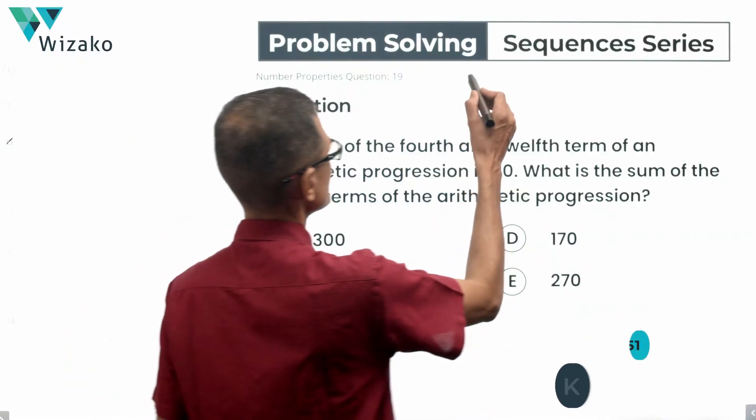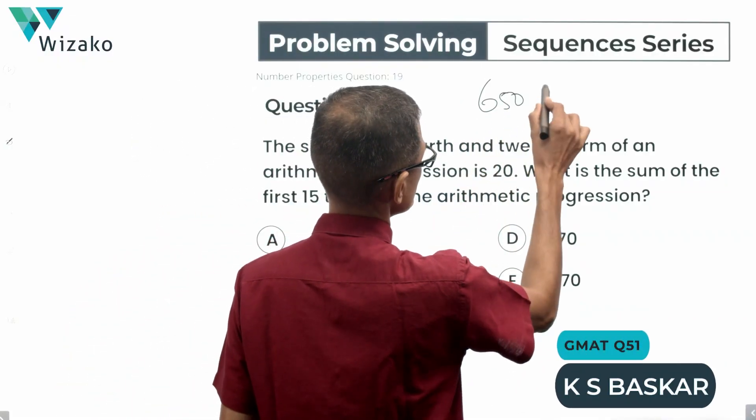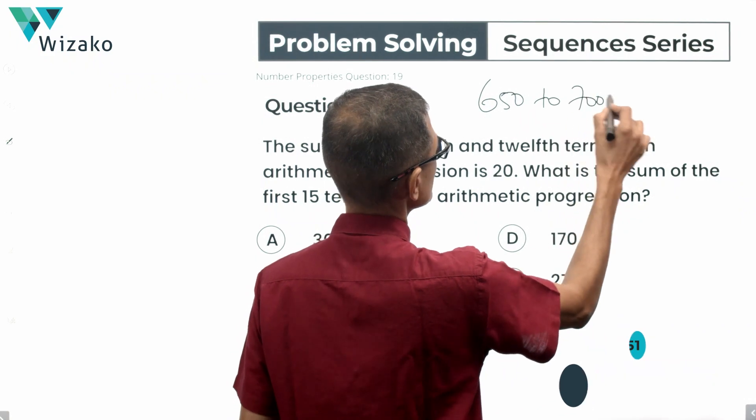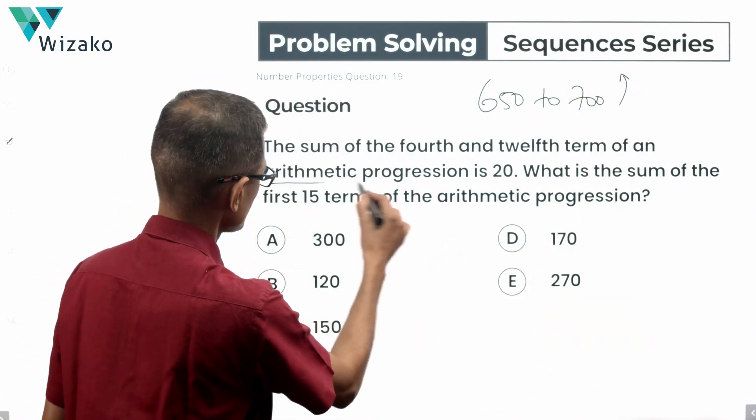Hi, everyone. This is a medium difficulty question. We will classify the question as a GMAT 650 to 700 level question in sequences and series. It is an arithmetic progression question.